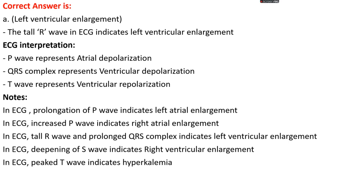If there is a prolongation of a P wave, that indicates left atrial enlargement, and if there is an increased P wave, that indicates right atrial enlargement. If there is a tall R wave and prolonged QRS complex, that indicates left ventricular enlargement. If there is a deepening of the S wave, that indicates right ventricular enlargement. If there is a peaked T wave, that indicates hyperkalemia, where there is an increased amount of potassium in the blood.